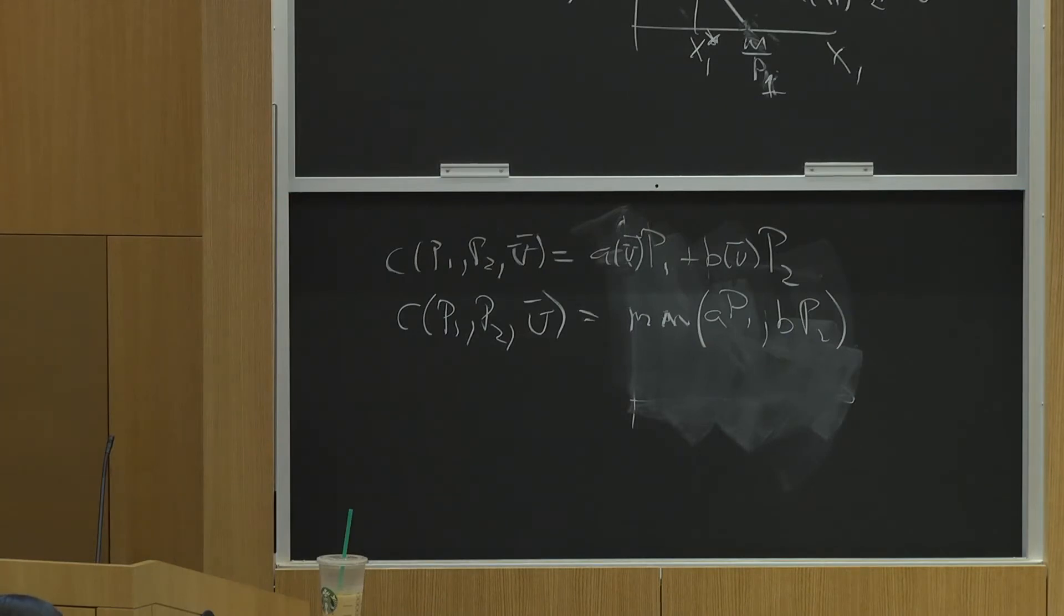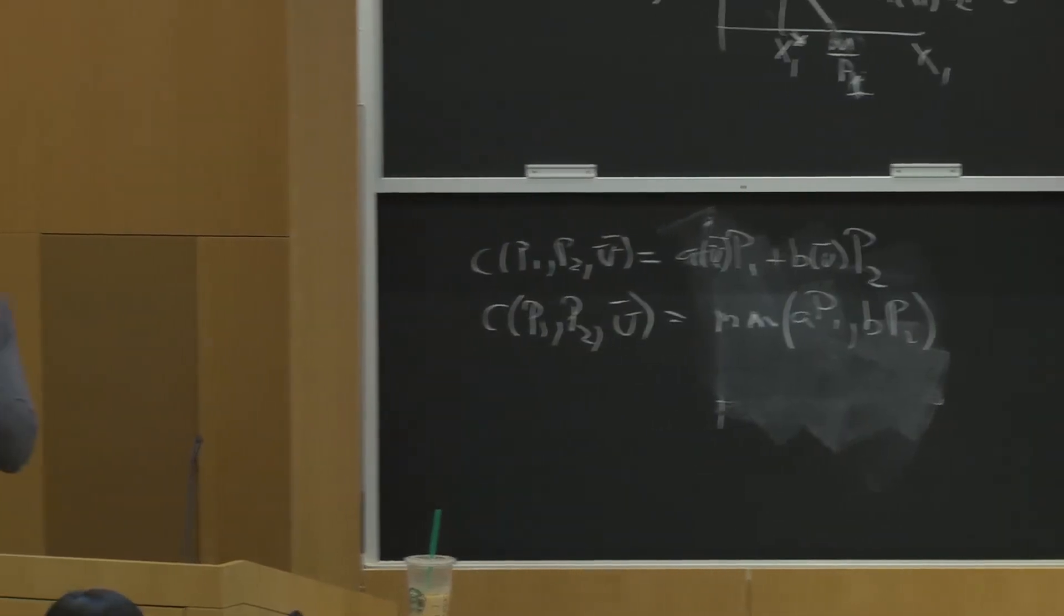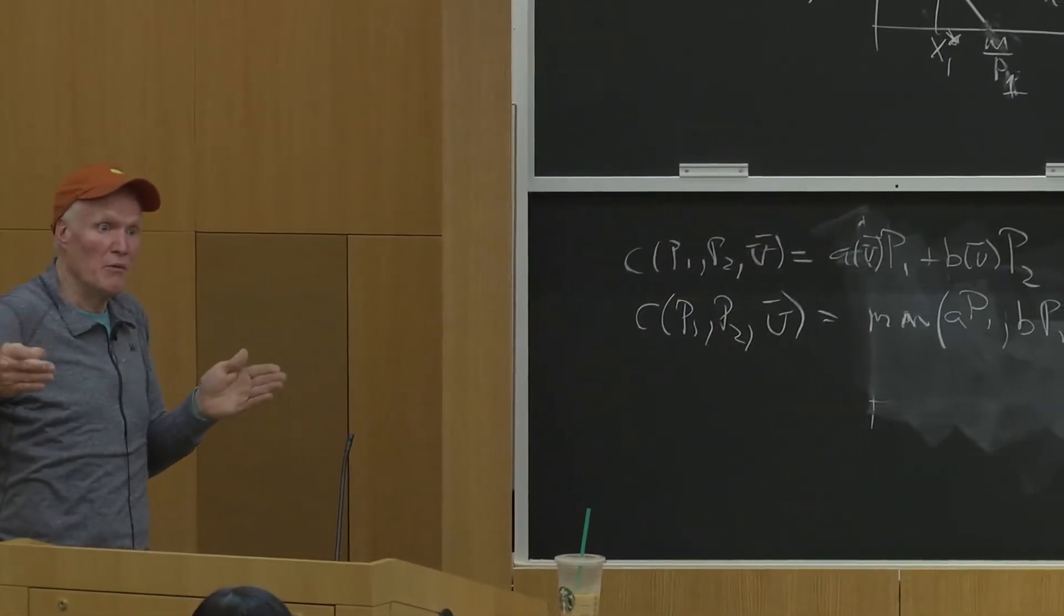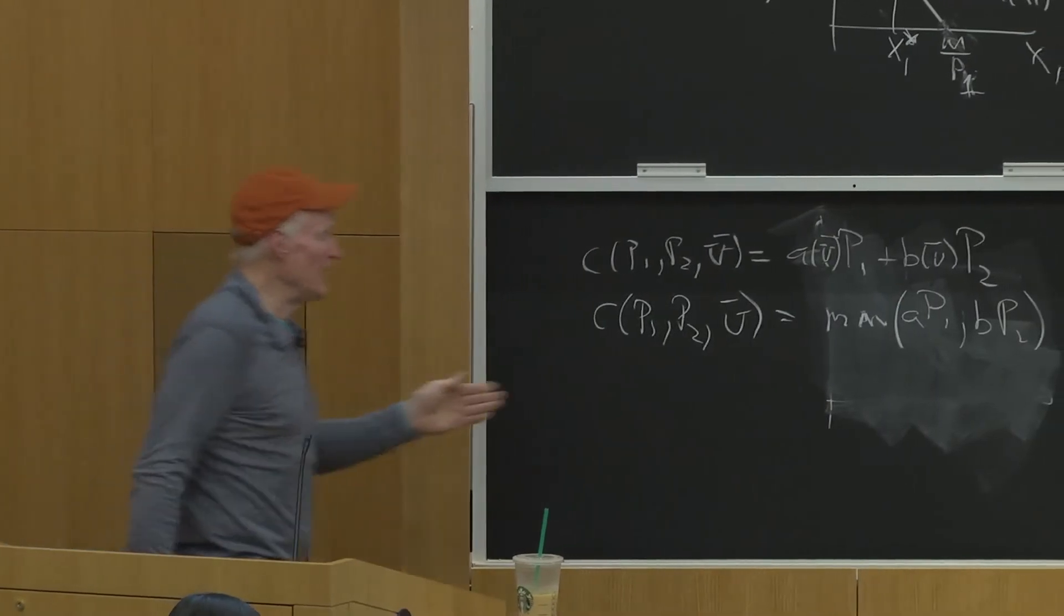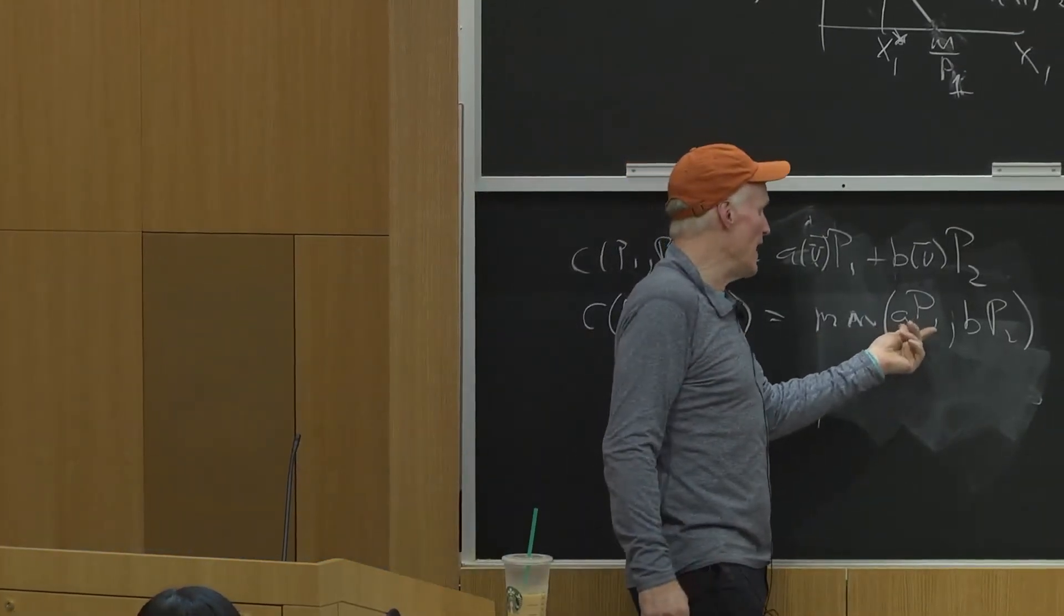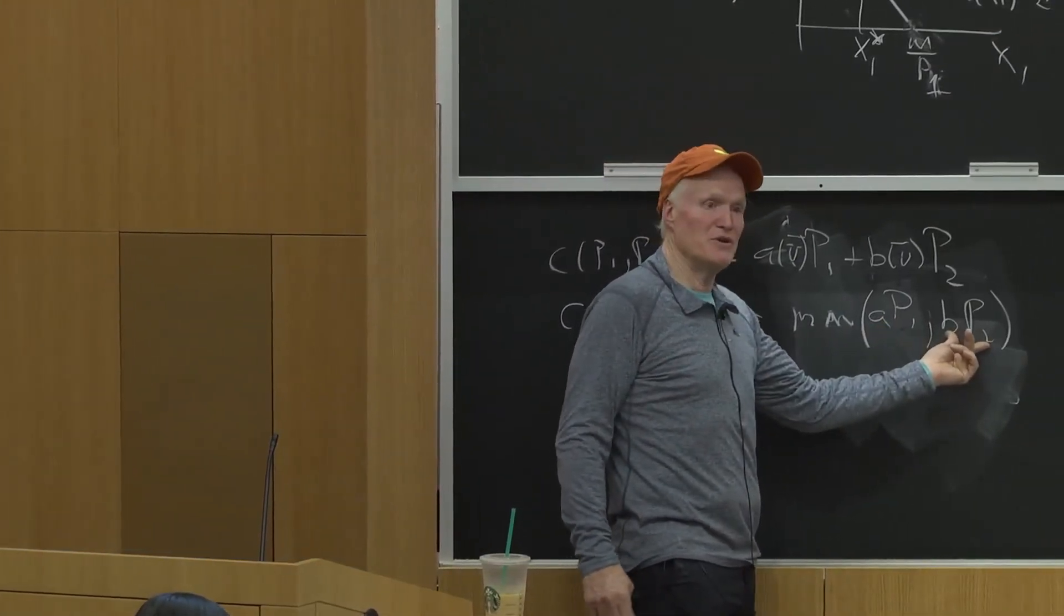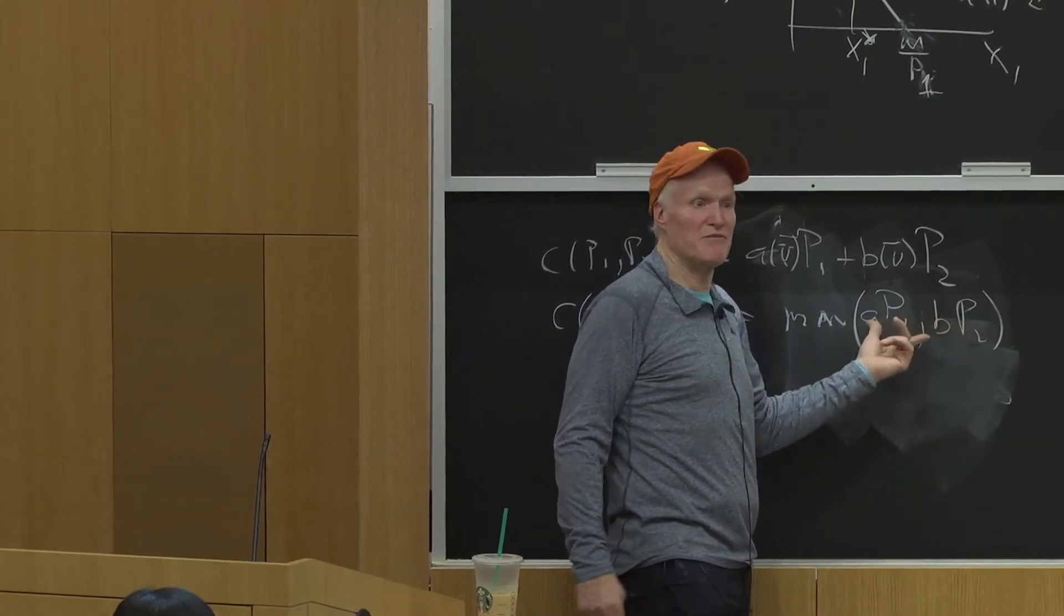Then what would it tell you? His indifference curves would be straight lines. He'd be picking whichever, he'd either be buying A, P1, A units of good one, or B units of good two, and he'd just choose whichever one was cheaper.